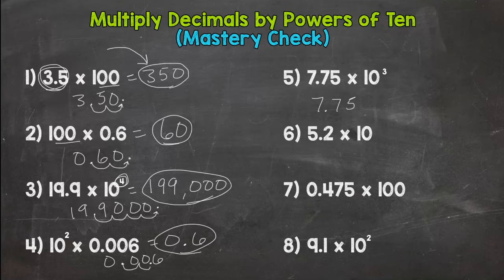So 7.75 times 10 to the 3rd, or 1,000. Move it 3 times. 1, 2, 3. Fill.